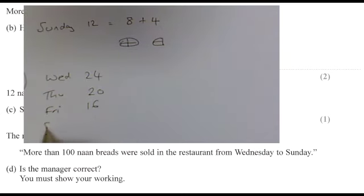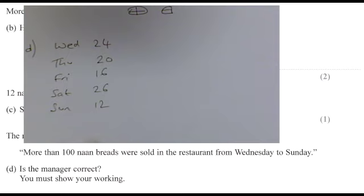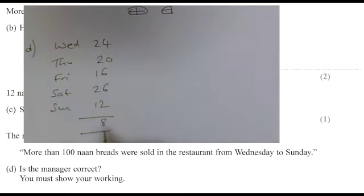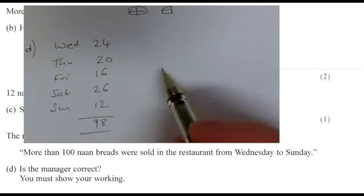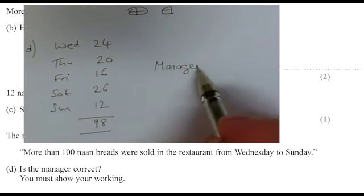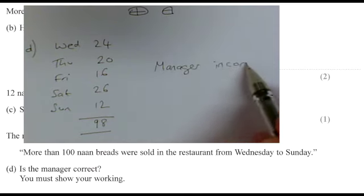Saturday, and of course we're told Sunday has 12—they told us that in the question. So if we add those all up, we're going to find what we get looks like 98. So I'm afraid the manager is wrong. He's not correct—the manager did not sell more than 100 loaves. Pretty close, but not more than 100. He's wrong.